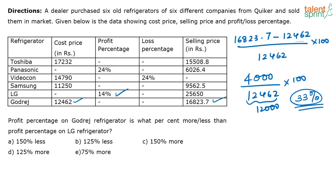Now, what are you supposed to find out? The question asks: profit percentage on Godrej is what percentage more or less than the profit percentage on LG? So, LG has made 14% profit and Godrej has made approximately 33% profit. You have to compare these two profit percentages and find what percentage more or less one is than the other.